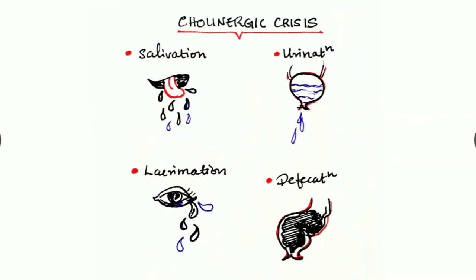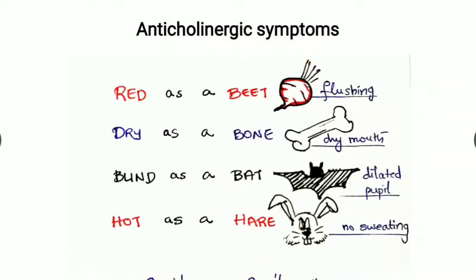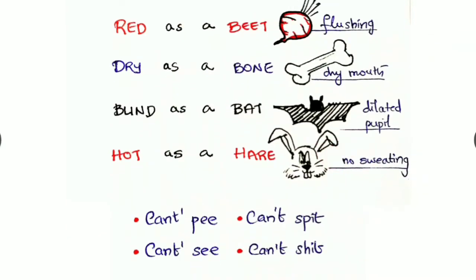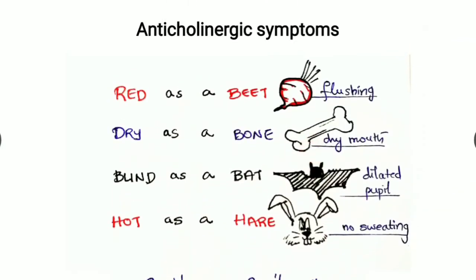Anticholinergic symptoms can be studied with a mnemonic: red as a beet due to flushing, dry as a bone due to dry mouth, blind as a bat with dilated pupils, hot as a hare with no sweating. It can also be said as can't pee, can't see, can't spit, can't shit - just opposite to cholinergic crisis.